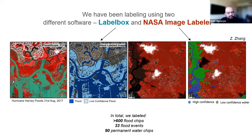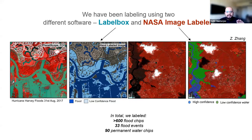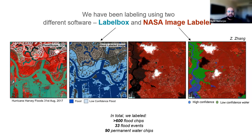We use two different software tools: Labelbox with an academic license and NASA's in-house image labeler. We found Labelbox to be more user-friendly and allows higher zoom levels, so we could create more detailed flood maps. We followed the same scheme — flood, low confidence, and high confidence — but found different labelers had different ideas of what low and high confidence looks like, which is very interesting and will likely impact our models. We have labeled more than 600 flood chips, 30 flood events, and 90 permanent water chips.